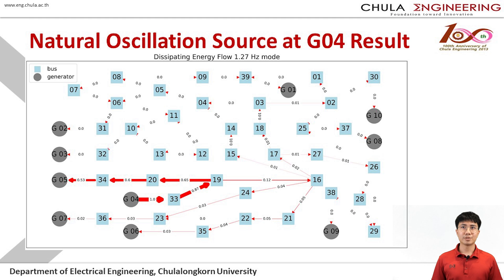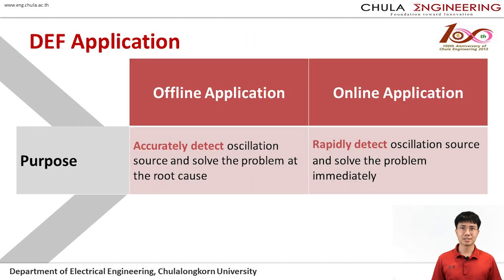The simulation results show the output of the DEF method, where the oscillation source is at generator number 4. The DEF method locates the source at generator number 4, which aligns with the given source. After validating the DEF method, the applications are developed. The applications are divided into two types: offline and online.